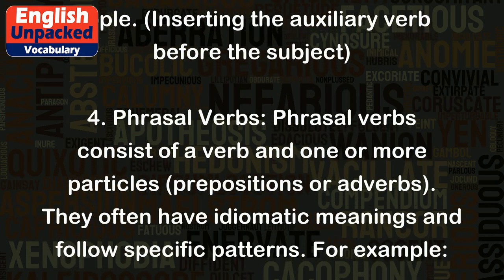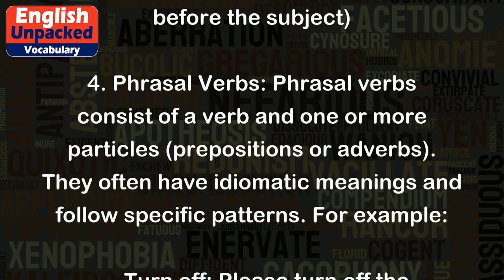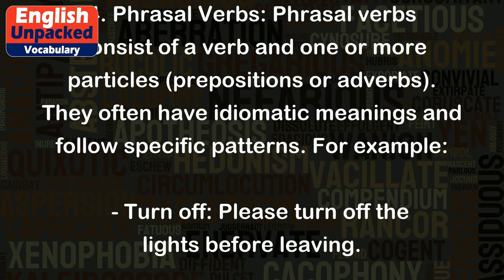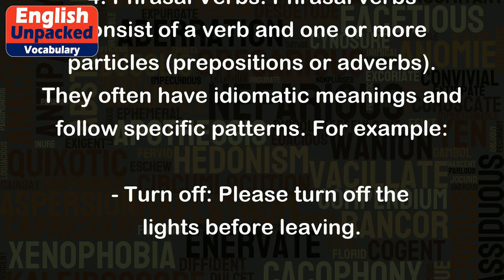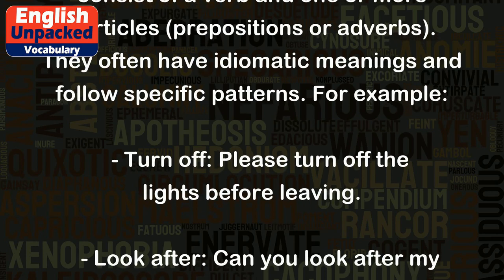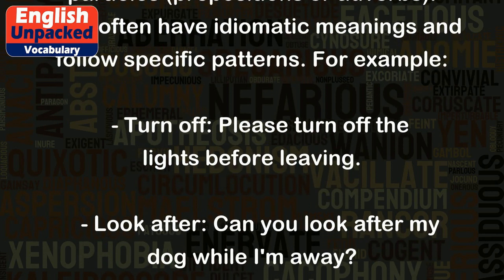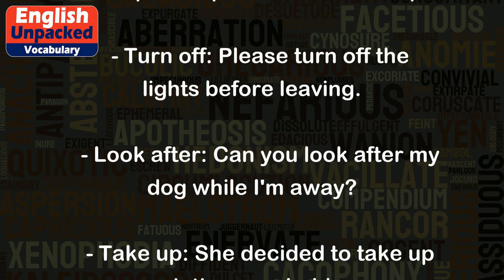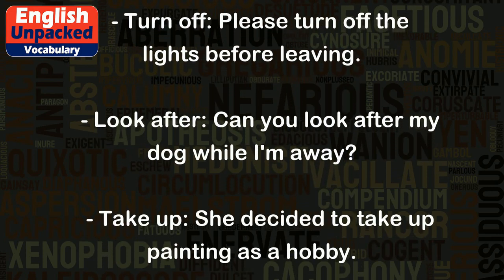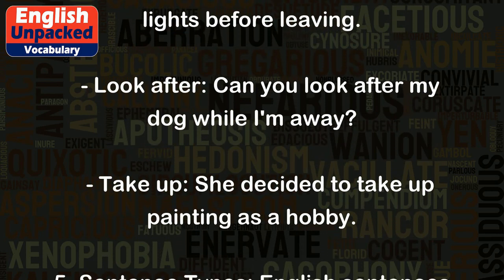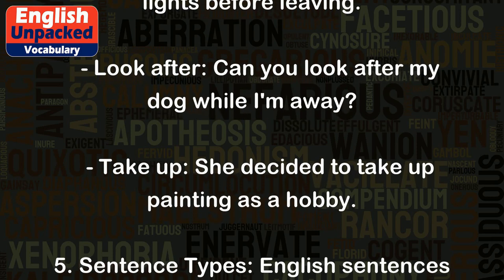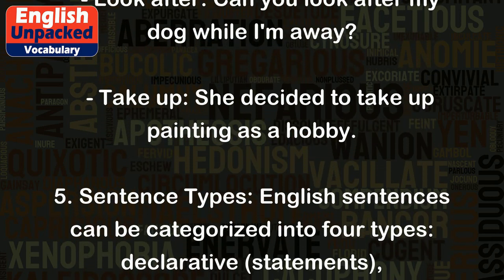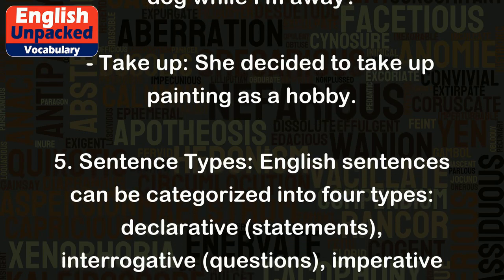4. Phrasal Verbs. Phrasal verbs consist of a verb and one or more particles — prepositions or adverbs. They often have idiomatic meanings and follow specific patterns. For example: turn off — please turn off the lights before leaving. Look after — can you look after my dog while I'm away? Take up — she decided to take up painting as a hobby.